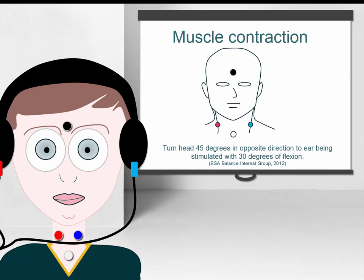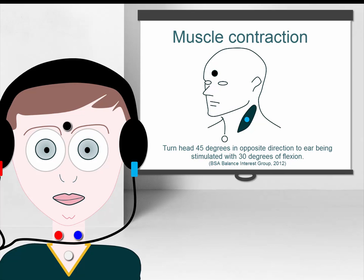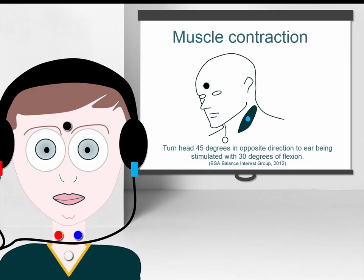Most clinicians instruct the patient to contract their sternocleidomastoid muscle by simply asking them to turn their head 45 degrees in the opposite direction to the ear which is being stimulated, with flexion of 30 degrees.